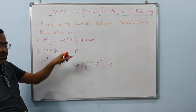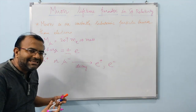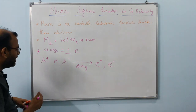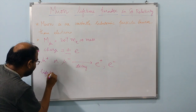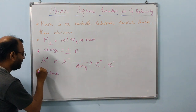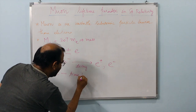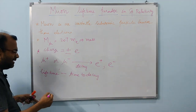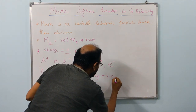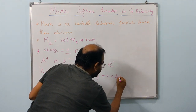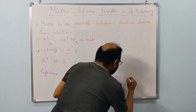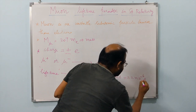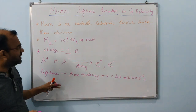The muon is unstable, so it decays. The time it takes to decay is called the lifetime of the subatomic particle. For the muon, this time is calculated to be about 2.2 microseconds — that is, 2.2 × 10⁻⁶ seconds. It is such a short-lived particle.